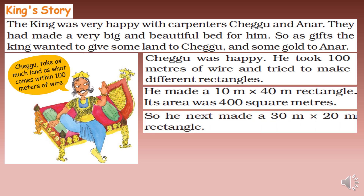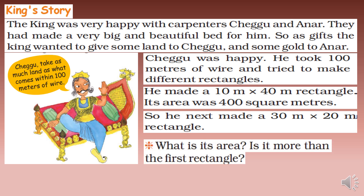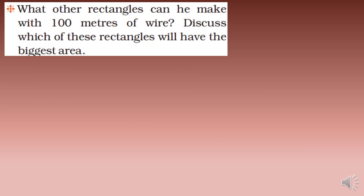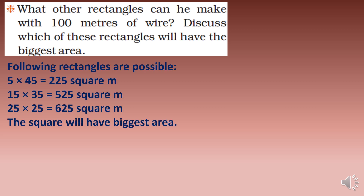Chegu made a 10-meter by 40-meter rectangle — its area was 400 square meters. He next made a 30-meter by 20-meter rectangle. The area is length times breadth: 30 multiplied by 20 equals 600 square meters. Is it more than the first rectangle? Yes, it is more than the first rectangle's 400 square meters.